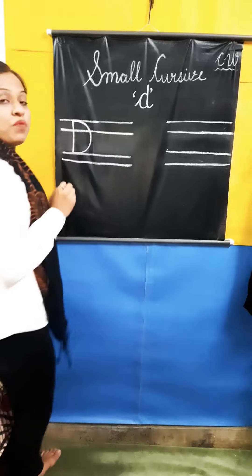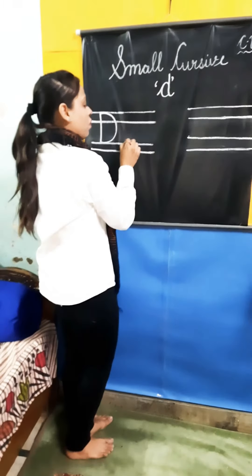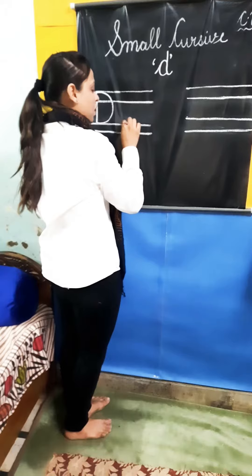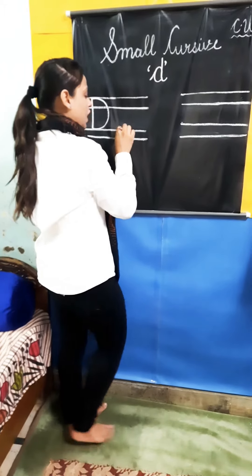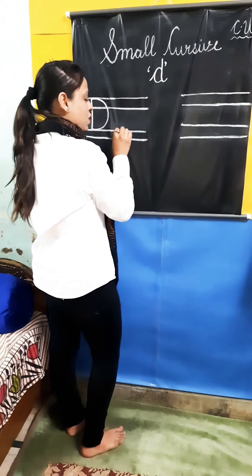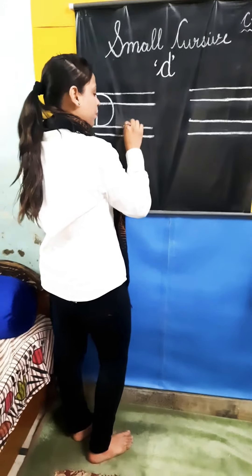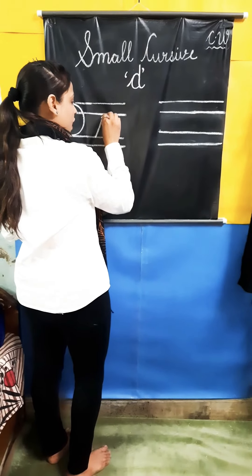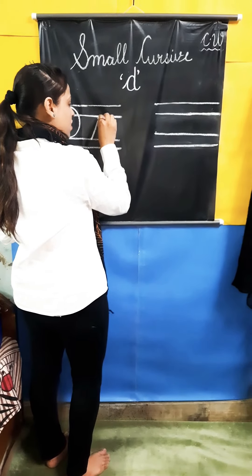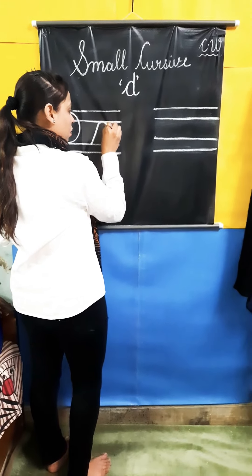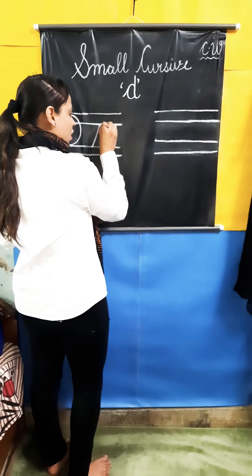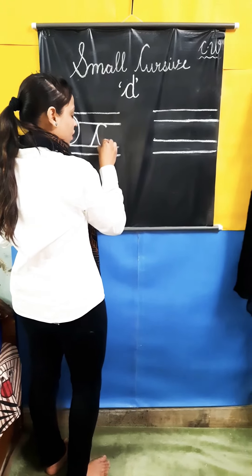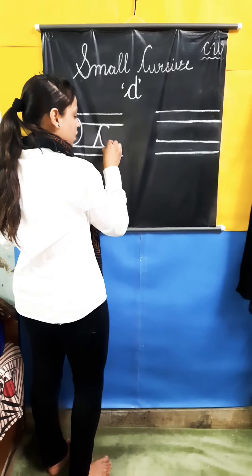Now we will see the formation. Ma'am is going to write. See the formation of D. You have to start from the third line. Make a small slanting line till the second line, then make a curve like C, till the third line.